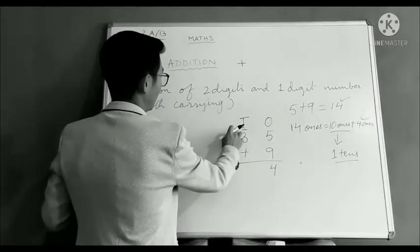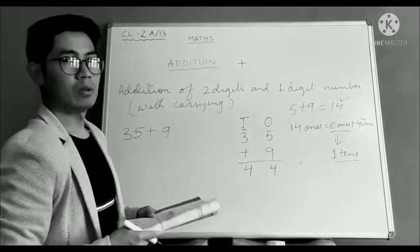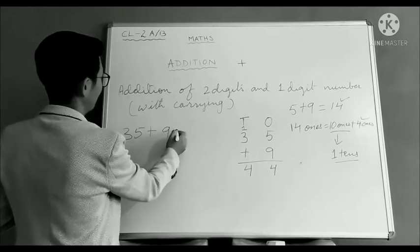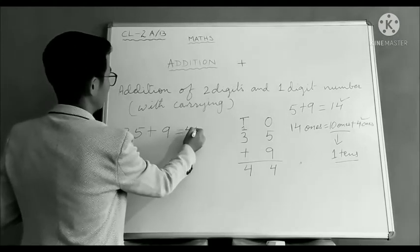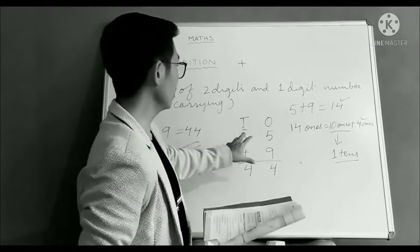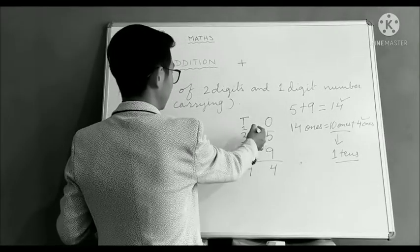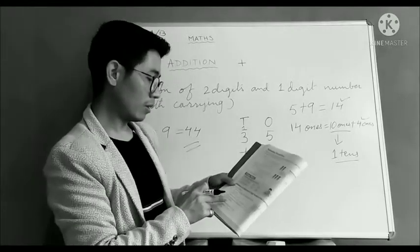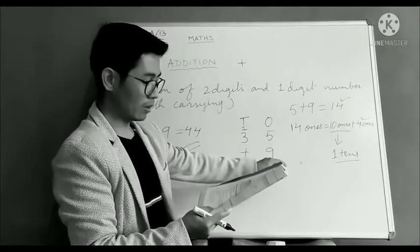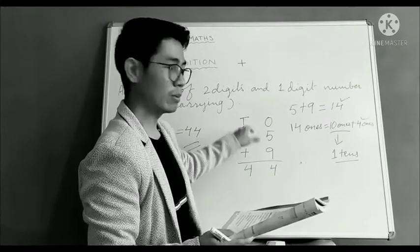Now we add 1 plus 3, 4. So 35 plus 9 equals to 44. So this is how we do. We have done with carrying the number. We have written 4 here which is ones column, and carry over 1 to tens place.